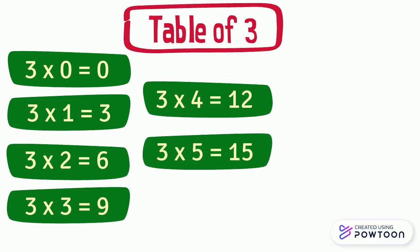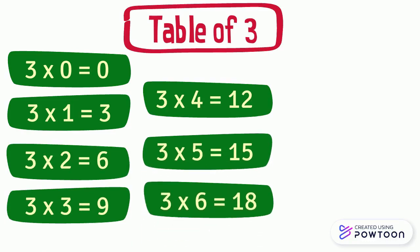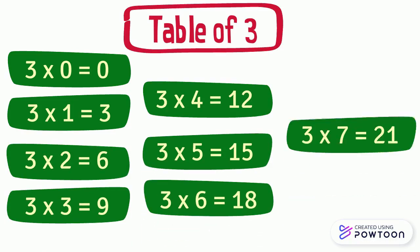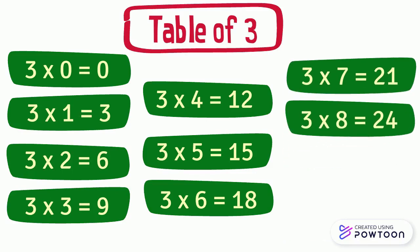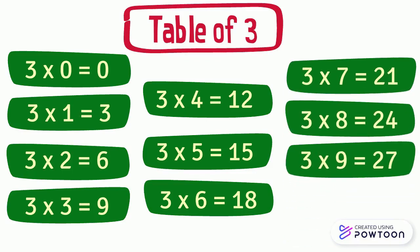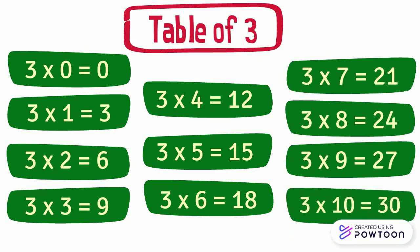Three times seven equals twenty-one. Three times eight equals twenty-four. Three times nine equals twenty-seven. And three times ten equals thirty.